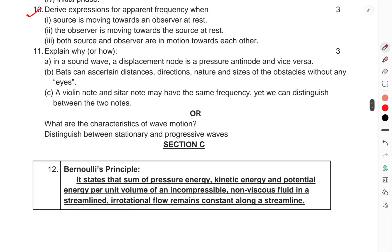Question 10. Derive the expression for the apparent frequency when (i) the source is moving towards the observer at rest, (ii) observer is moving towards the source at rest, (iii) both source and observer are in motion towards each other.